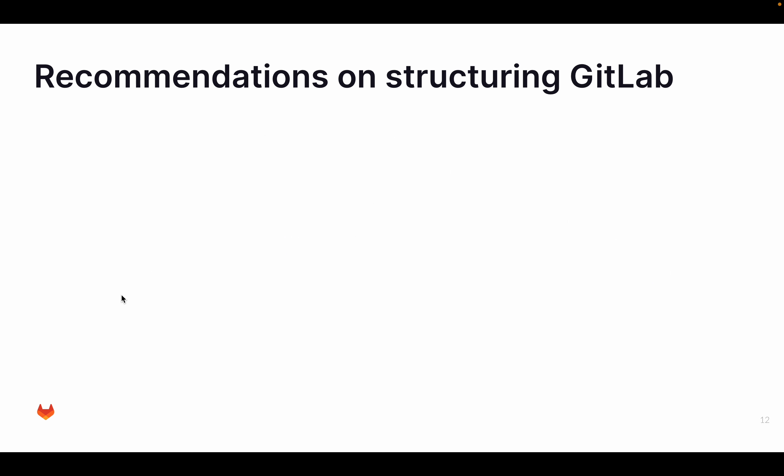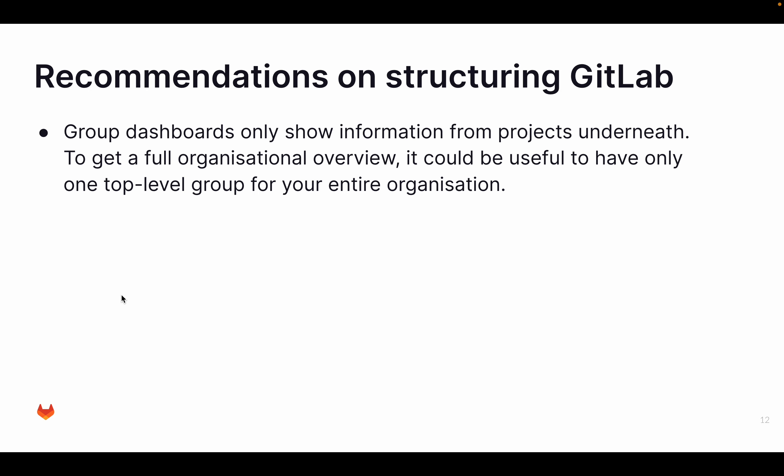Some recommendations on structuring GitLab: dashboards on group level show information for the entire structure underneath that group — all subgroups and projects. If you want a full organizational view, such as seeing all vulnerabilities within an organization, it makes sense to have a single top-level group for your entire organization, or for a subsidiary in a large enterprise. Set up your hierarchy up to the top-level group, because the top-level group is the highest level at which you can view grouped dashboard information.